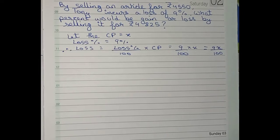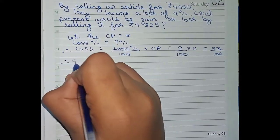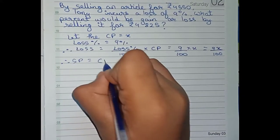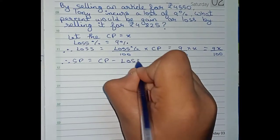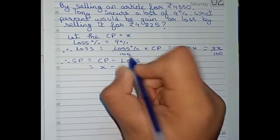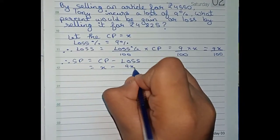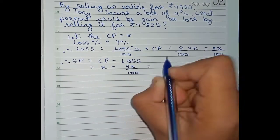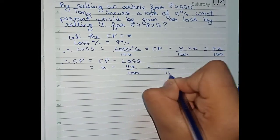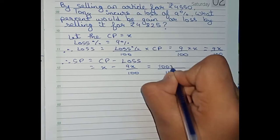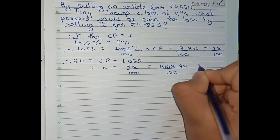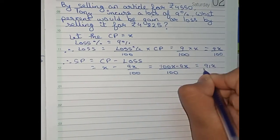So now we will find our SP. Therefore SP equals to the formula CP minus loss. So CP is x and loss is 9x by 100. We take 100 as the LCM. So it will become 100x minus 9x which is equal to 91x by 100.